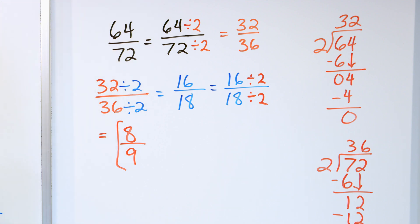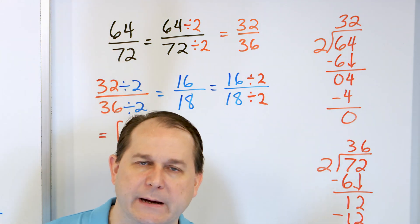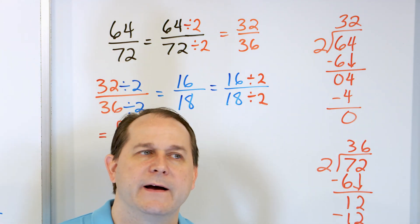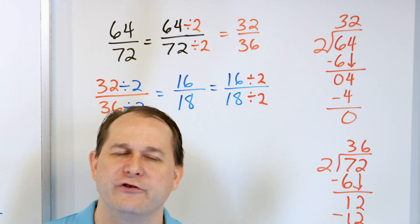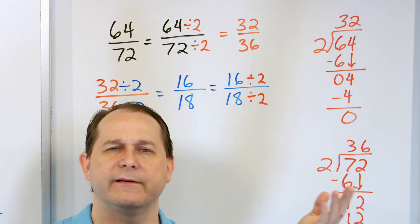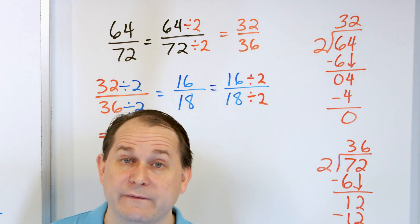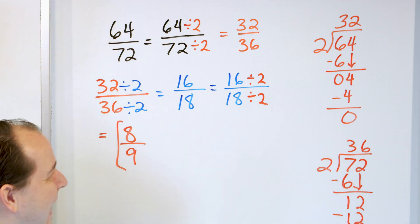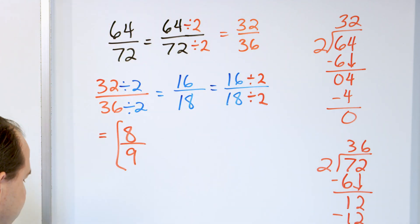8/9 is as far as I can go. Having to do this multiple times means there was a larger factor I could have divided by. But none of us are human calculators - none of us would just look at that and know to divide by 8 or something. So if it's even, just keep dividing by 2 and you'll eventually get to the final answer.